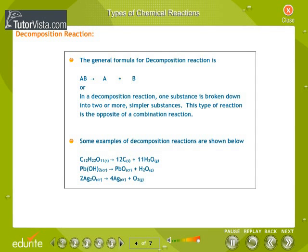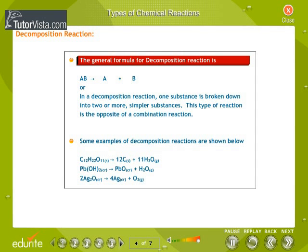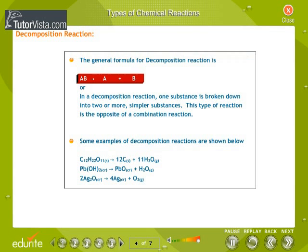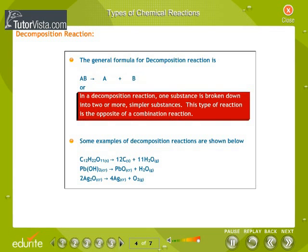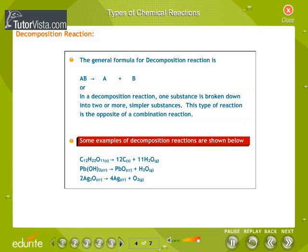The general formula for a decomposition reaction is: AB → A + B. In a decomposition reaction, one substance is broken down into two or more simpler substances. This type of reaction is the opposite of a combination reaction. Study the examples carefully.